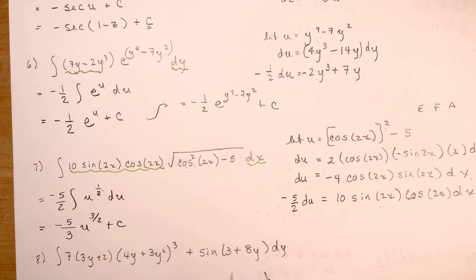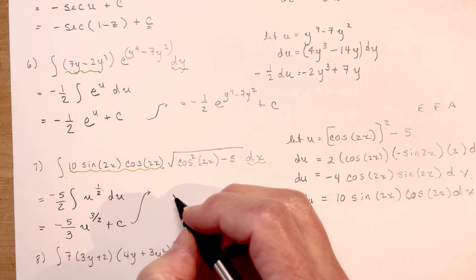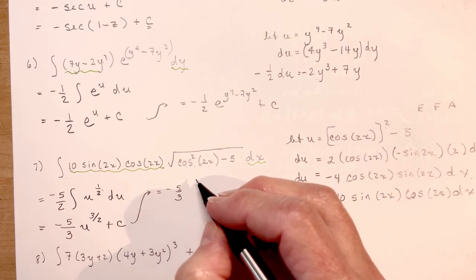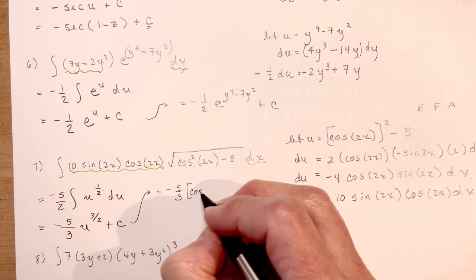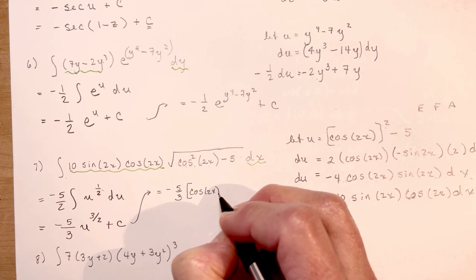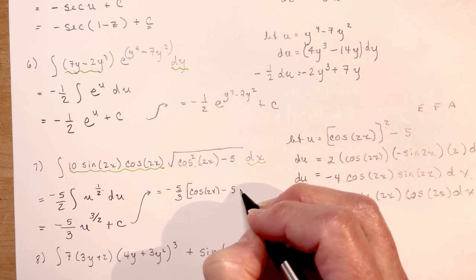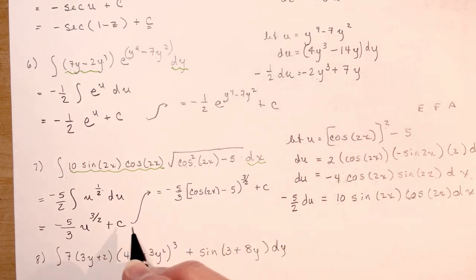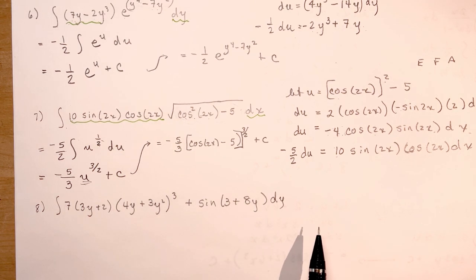All you have to do now is plug it in. So that's equal to minus 5/3 times the quantity cos 2x, all raised to the 3/2 power, plus c. Be careful with your brackets — I'm going to write that with a big bracket. It's getting a little messy, so I'll flip the page for the last one.